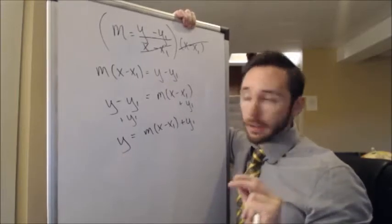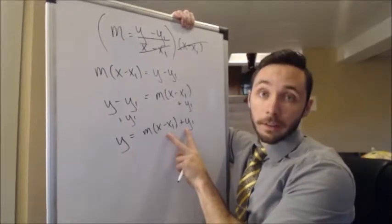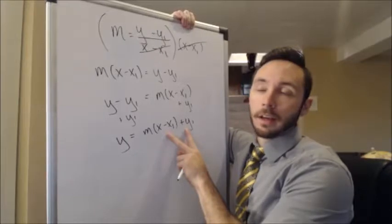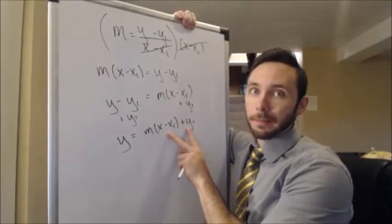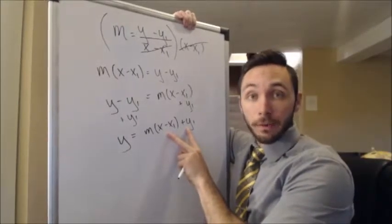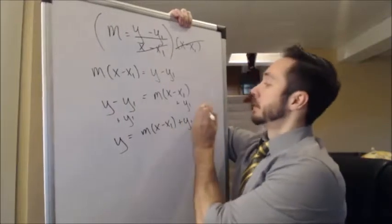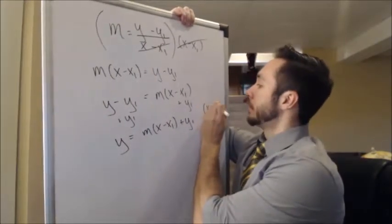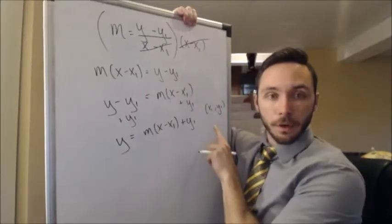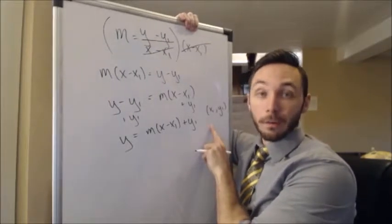Now, what if that ordered pair that you were given, that x sub 1 comma, sorry, that x sub 1 comma y sub 1, what if it was actually a y-intercept? So this guy right here is a y-intercept.